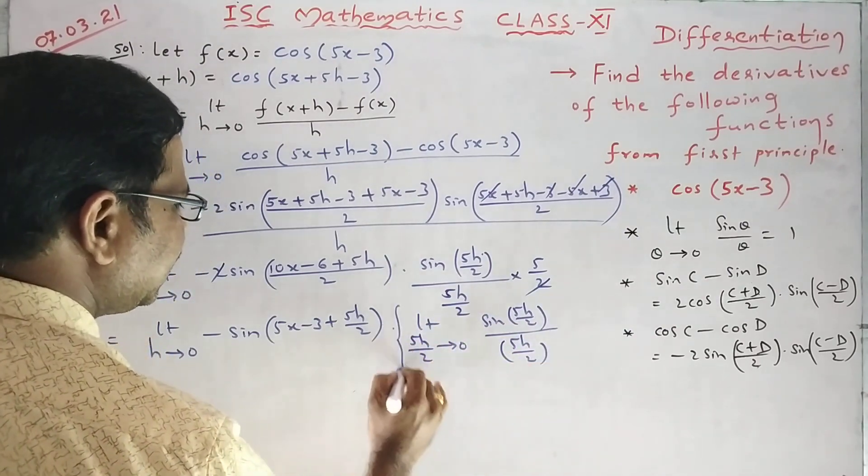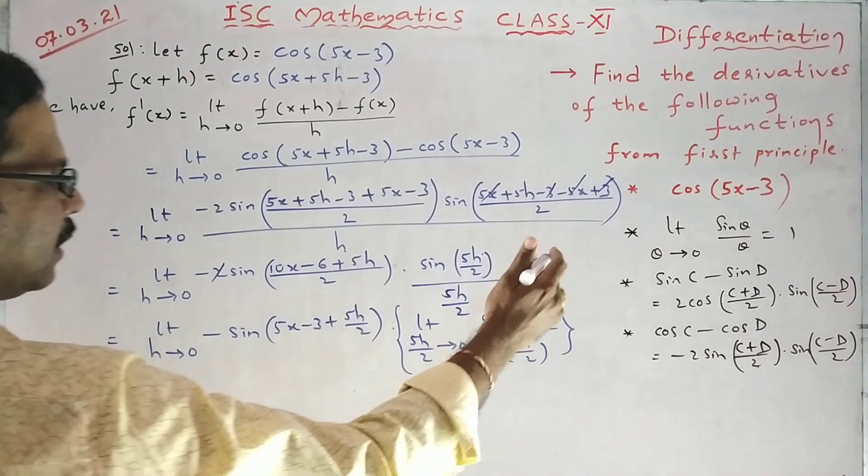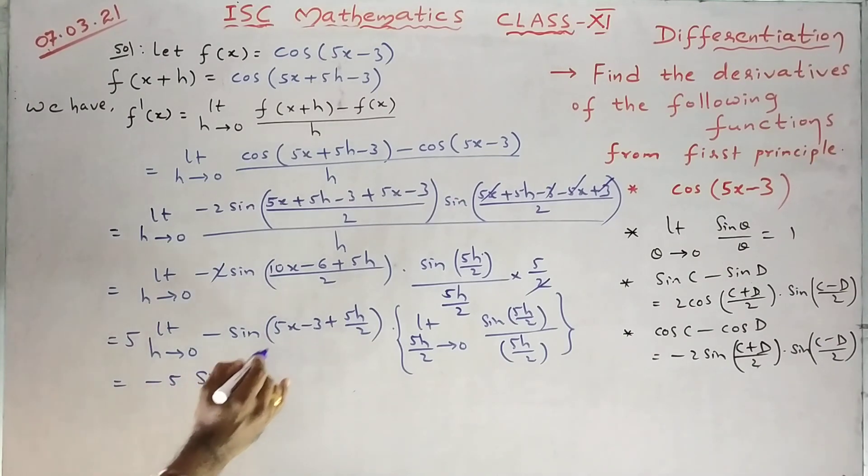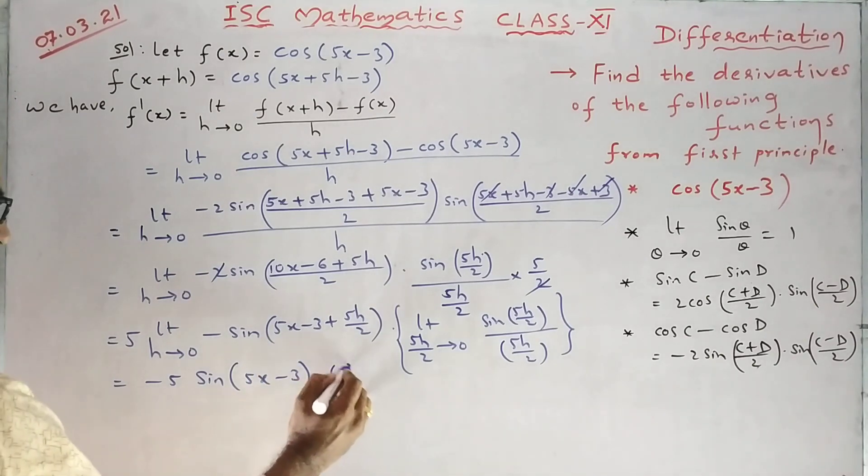So sin 5h by 2 upon 5h by 2. You can write that. This value becomes 1. This 5 I can keep outside. So minus 5 into sin h tends to 0.